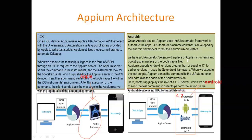If you are trying to automate a mobile application installed on a device with version 4.2 or above, it will use UI automator. If the mobile version is less than 4.2, it uses Selendroid. In simple words, APM is a wrapper of UI automator and Selendroid. Instead of using UI automator directly for above 4.2 and Selendroid for below 4.2 as two separate tools, APM combines these two tools and provides a full-fledged automation tool.